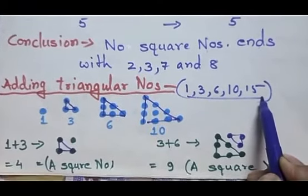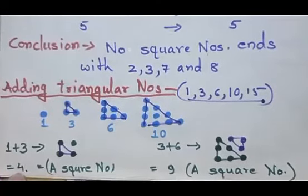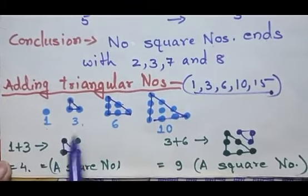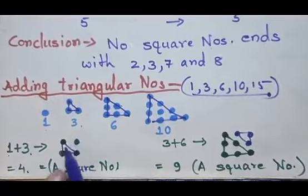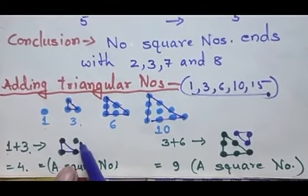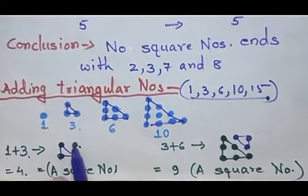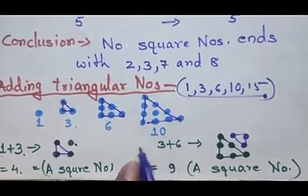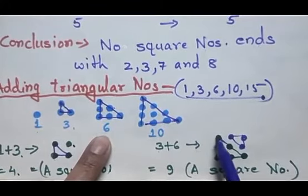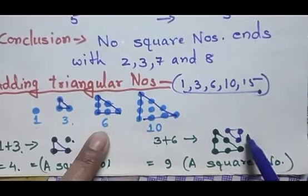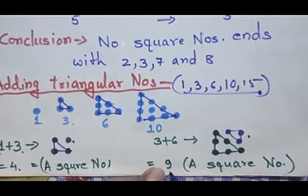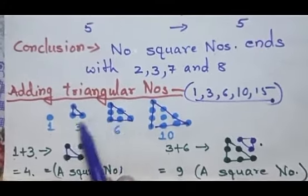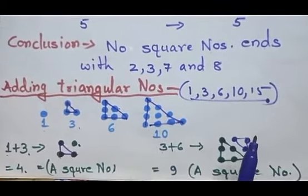Let us understand one more property of square numbers using triangular numbers. When we add 1 and 3, both are triangular numbers. When we add 1 with 3 — taking 3 dots and 1 single dot — you have 4 dots, which represents 4, and 4 is a square number. Let us take one more example: adding 3 and 6. This represents 6 and this represents 3. If you count all the dots, you have 9 in total, and 9 is again a square number. So if you add any 2 consecutive triangular numbers, it gives you a square number.